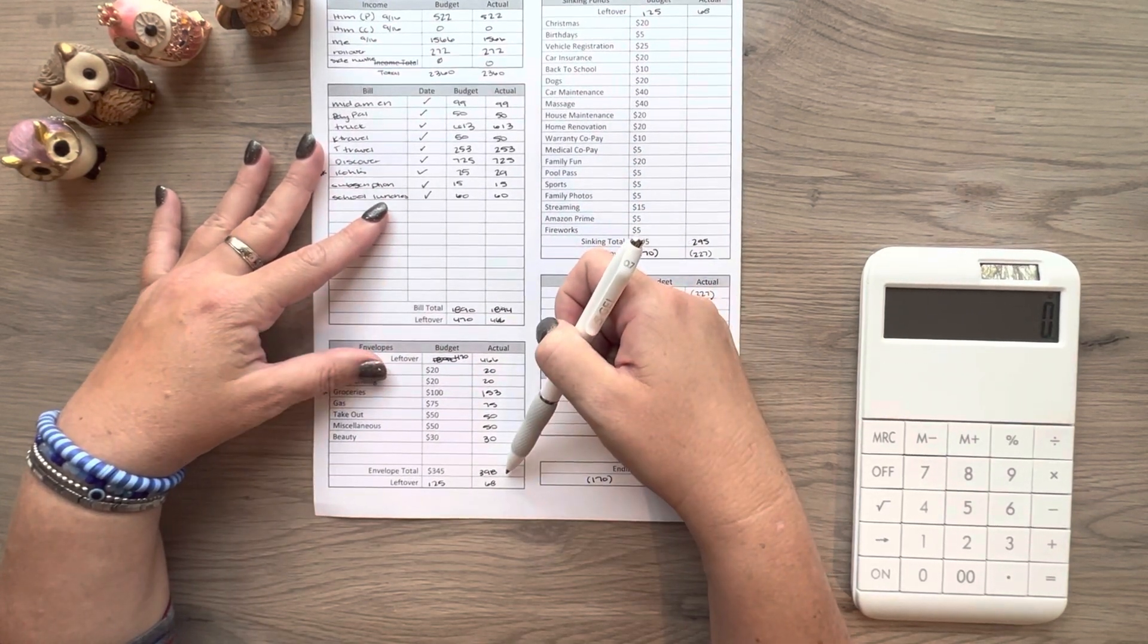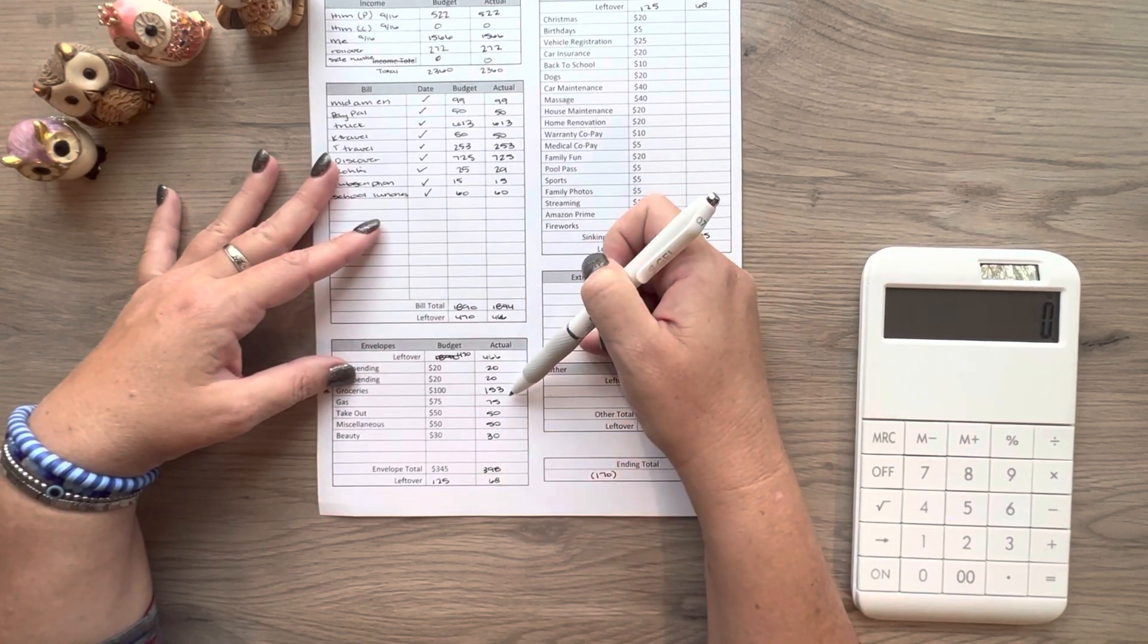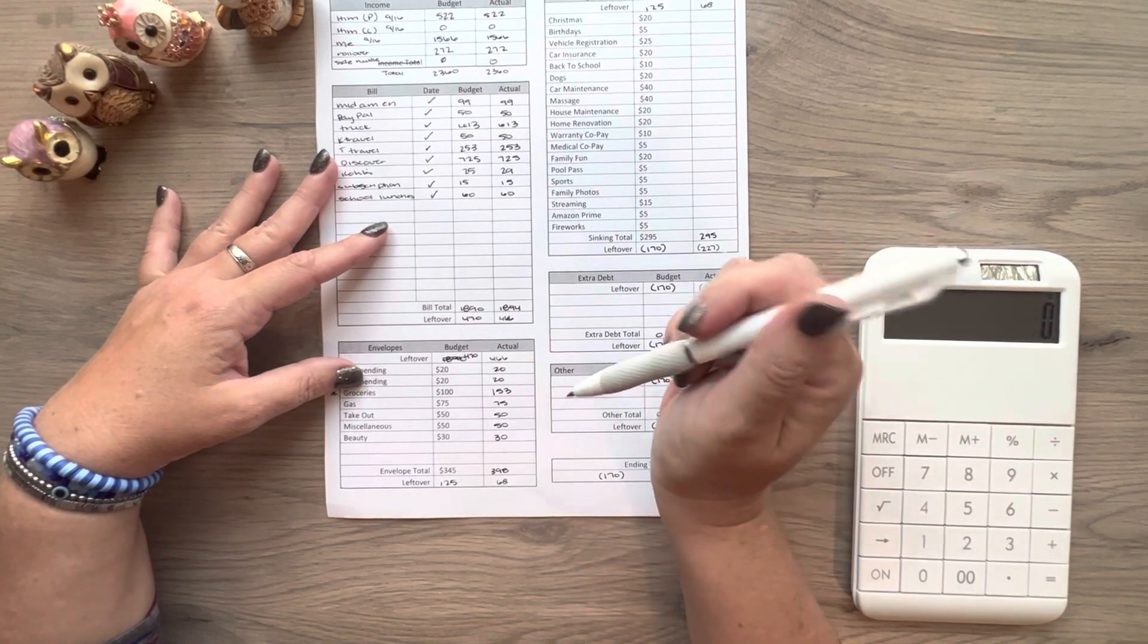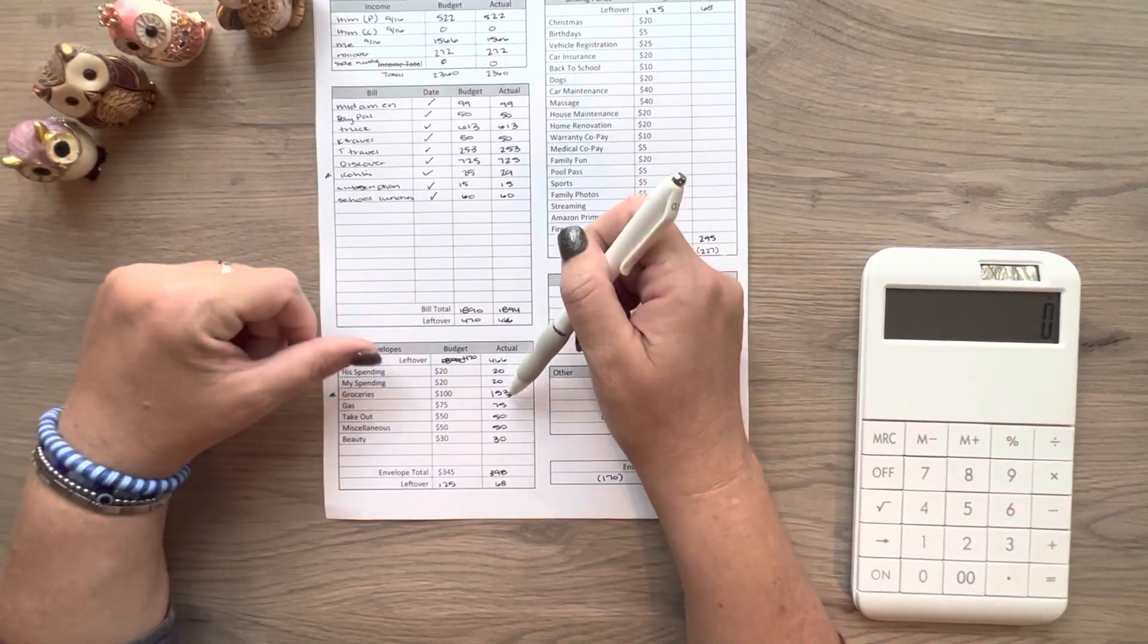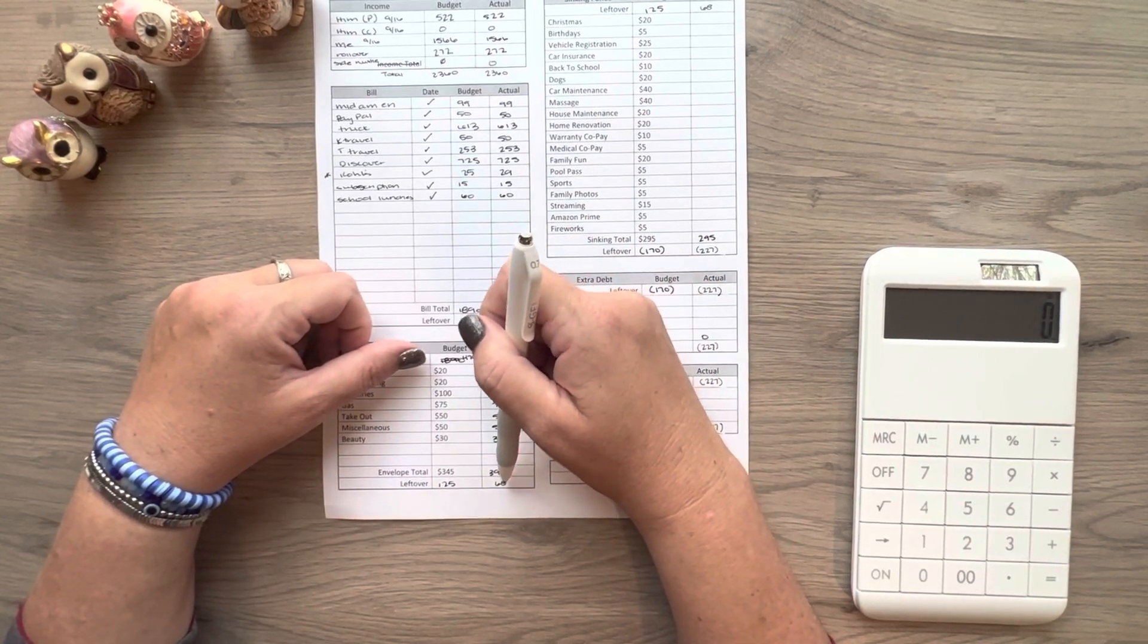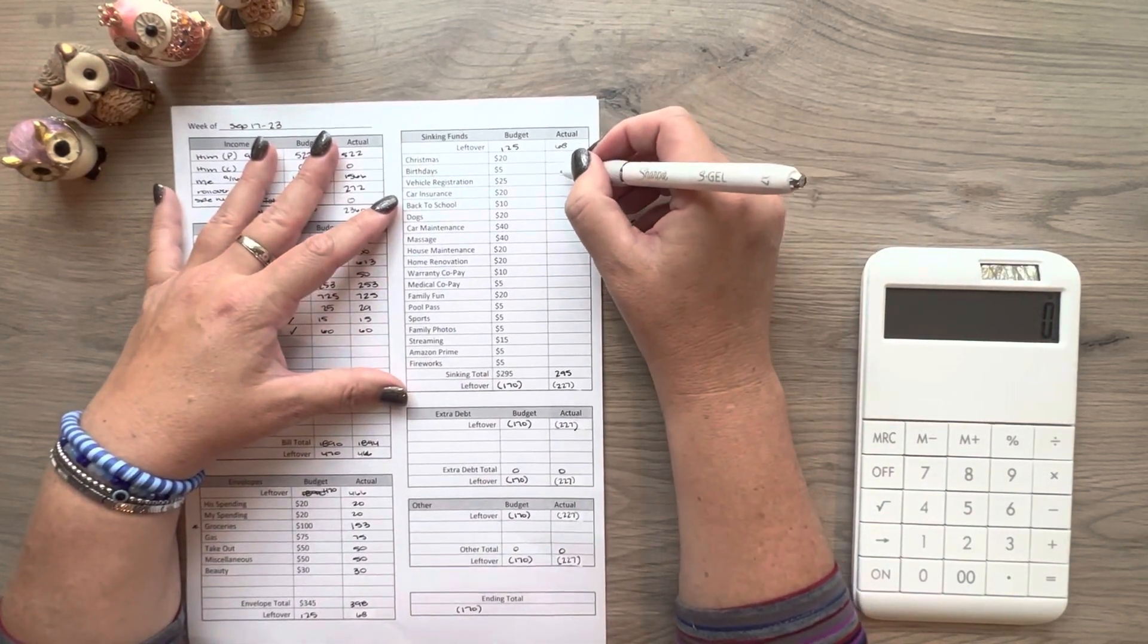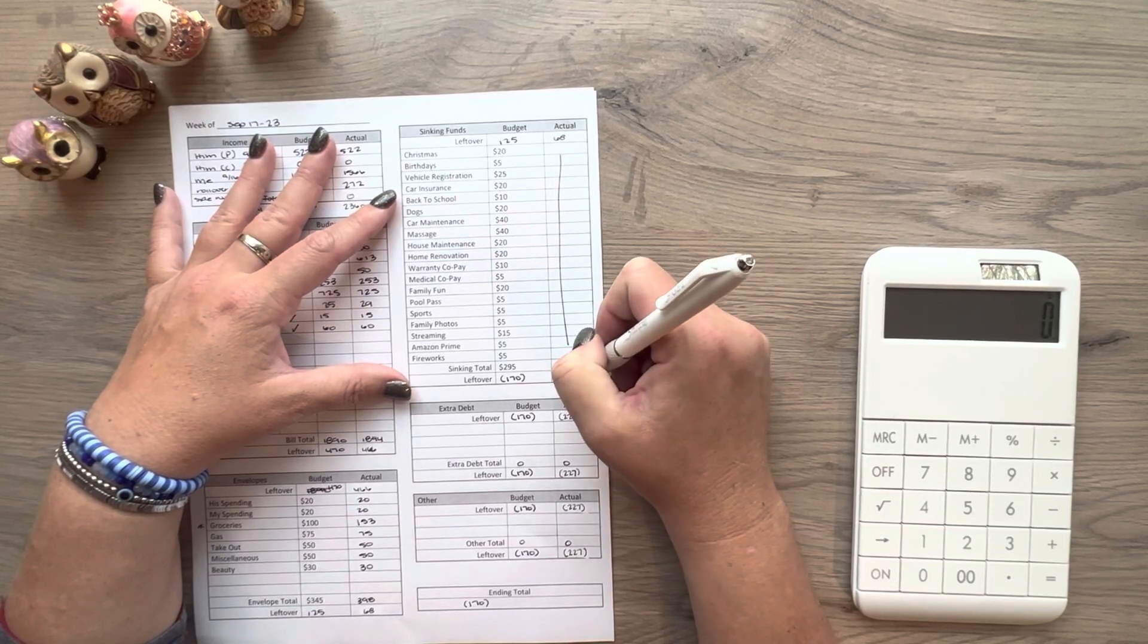And so we filled all of those, which was 398. I did go grocery shopping and it was a little over. If you saw my previous video about what we spent, our groceries was a little higher. I think I'm going to have to start budgeting more for groceries, but we'll see. So that was 398, which left $68. And we did stuff all of these for a total of 295 and leftover was a negative 227, which I'm rolling over to this week.